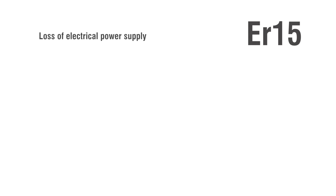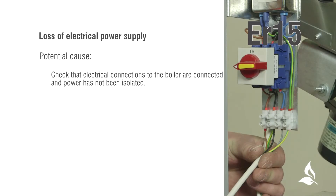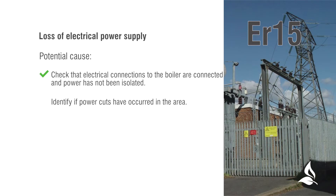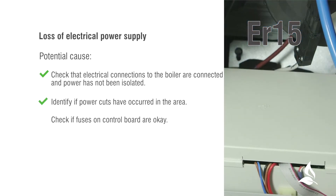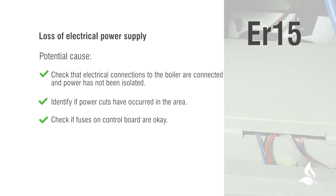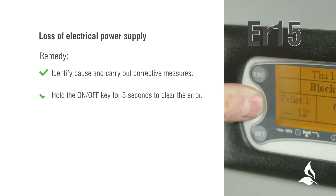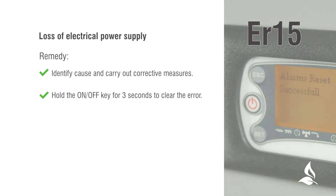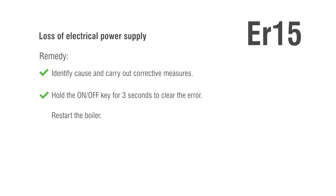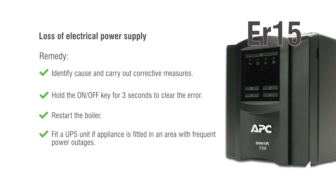ER15: Loss of electrical power supply. Potential causes: check that electrical connections to the boiler are connected and power has not been isolated; identify if power cuts have occurred in the area; check if fuses on the control board are OK. Remedy: identify the cause and carry out corrective measures. Hold the on-off key for 3 seconds to clear the error, then restart the boiler. Fit a UPS unit if the appliance is fitted in an area with frequent power outages.